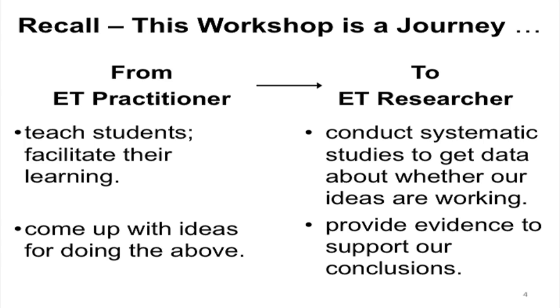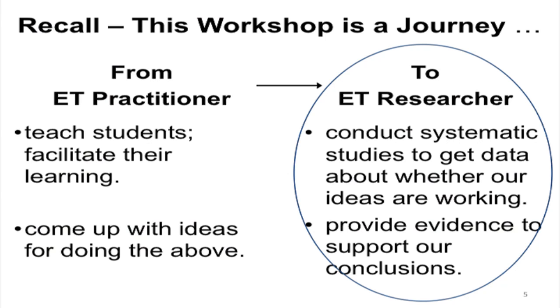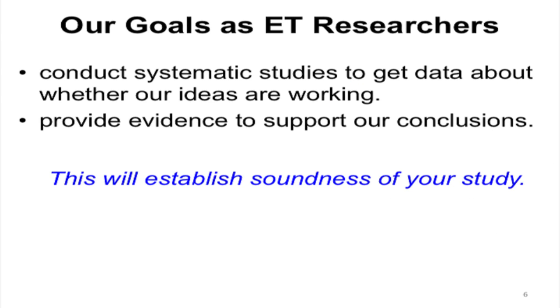So far, over the last two weeks, we have seen how to move along the journey from an ET practitioner — as faculty members and instructors in colleges — to doing research in educational technology. What we will concentrate on today is exactly what we have to do to conduct systematic studies, get data, and provide evidence. Our goals as ET researchers, after establishing novelty and positioning, is to conduct systematic studies and have sufficient evidence to support our conclusions, which establishes soundness — one of the five things referees look for.